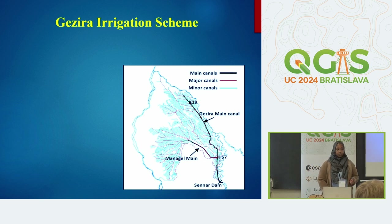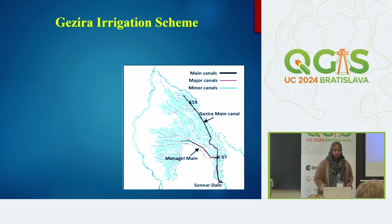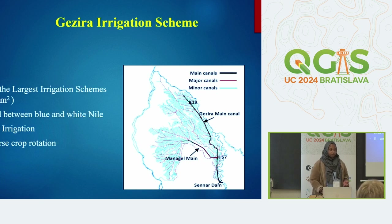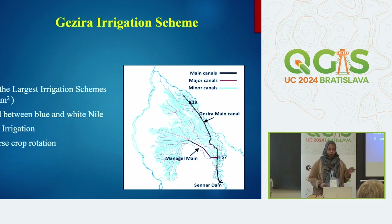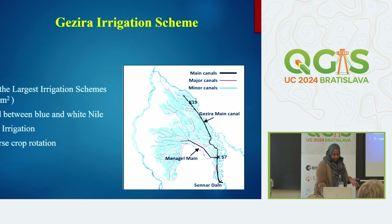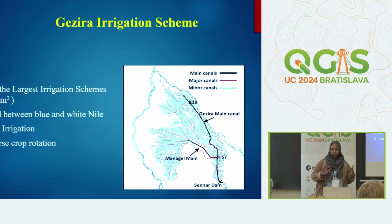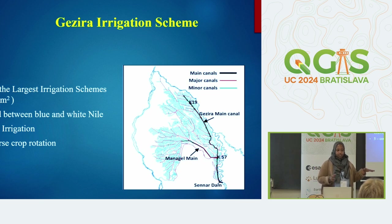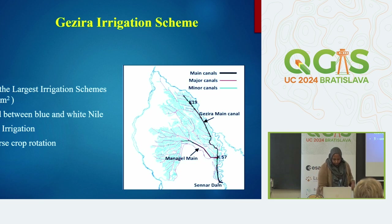My case study area is the Jazeera Irrigation Scheme, located in Sudan, Africa. It's one of the largest irrigation schemes globally, with an area of approximately 8,800 square kilometers. It uses gravity irrigation and has a coarse crop rotation where four different crops are cultivated in consecutive fields, one field is left fallow, and every season the pattern changes within the rotation.